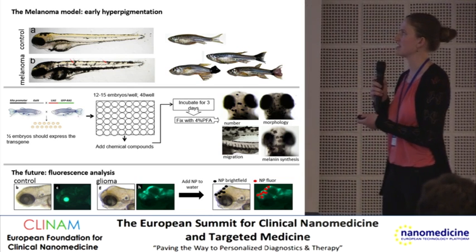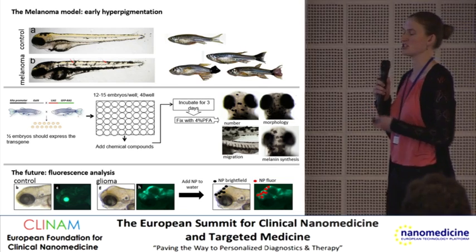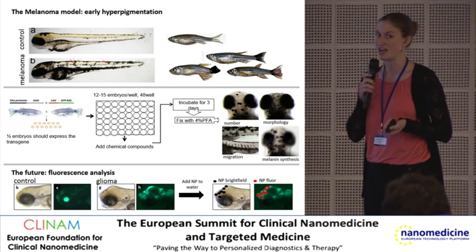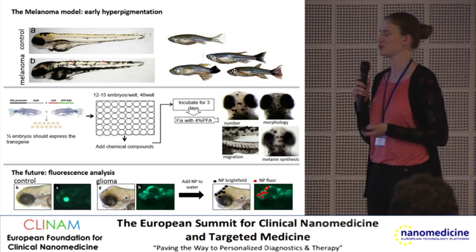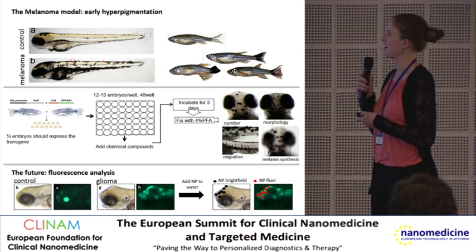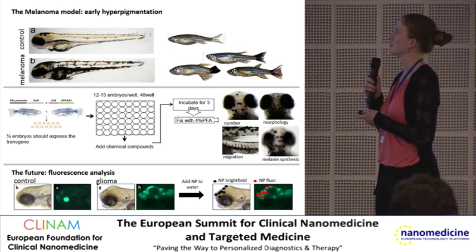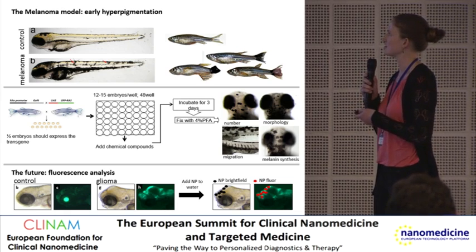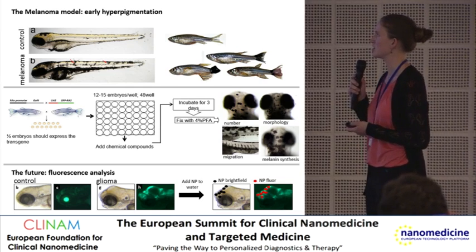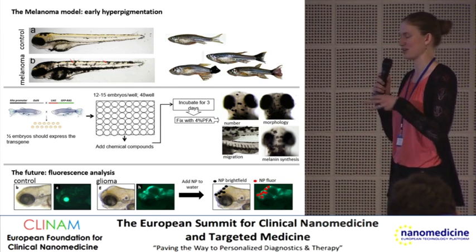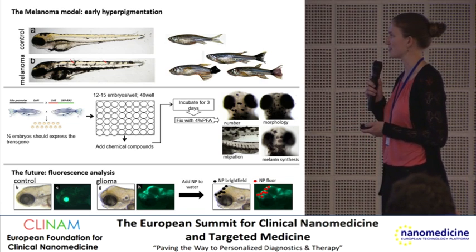We just take the whole clutch and distribute it into a 48-well plate with about 10 to 15 embryos. After adding drugs and incubation, we get different phenotypes that allow us not only to test the drug efficiency, but also to assess different effects of the drug.